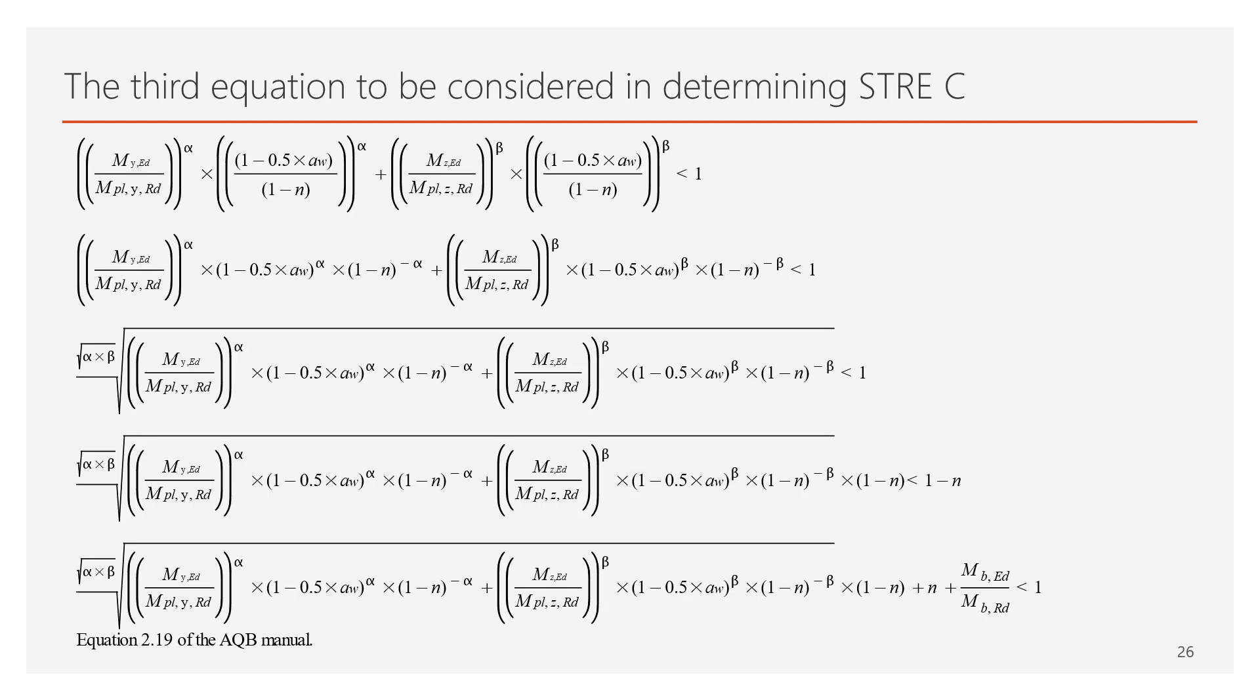On the other hand, to be conservative, the assessed utilization factor cannot be greater than the linear combination of the bending moments in the YY and the ZZ plane. In other words, the value of alpha and beta can be taken as unity, which leads us to the second equation that shall be considered by the determination of the utilization level when command STRE-C is called. This equation is also mentioned in the AQB manual with the number 2.20.